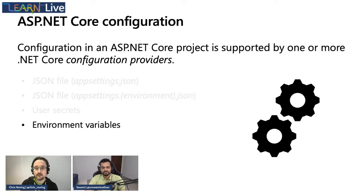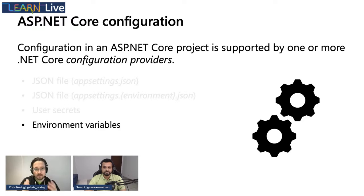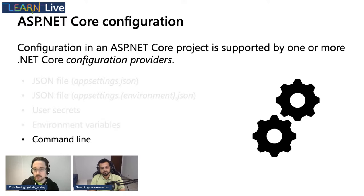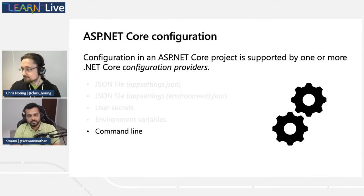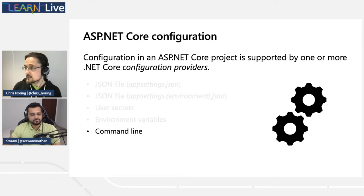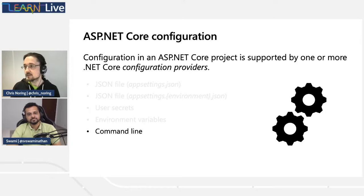Another place configuration values can come from is environment variables, which can always override values from files. It can also come from the command line. Now, imagine you're using Kubernetes and have copies of your app running in thousands of pods — what problems will you face, and how should you think about configuration?